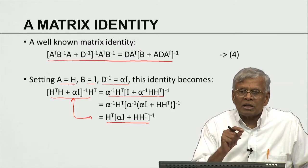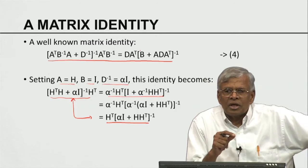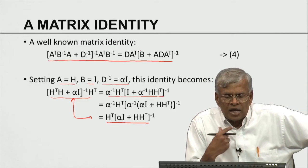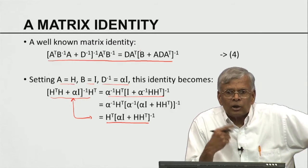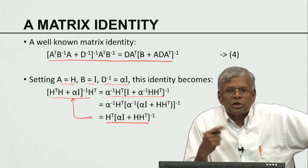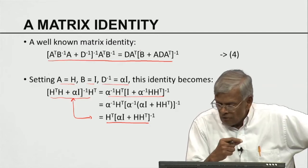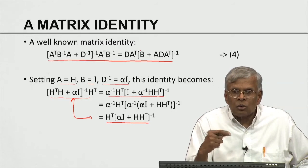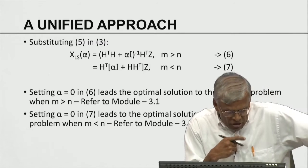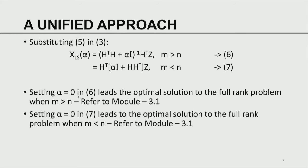Tikhonov's solution is important in two ways: it helps solve ill-posed problems, and it unifies the over-determined and under-determined solutions. You kill two birds with one stroke. Tikhonov specialized in solving inverse problems of various types and wrote a marvelous book on regularization methods. This is one of the simplest regularization methods often used in solving linear least square ill-posed problems. When alpha is zero, equation 6 gives the optimal solution for full-rank over-determined problems, and equation 7 for full-rank under-determined problems.